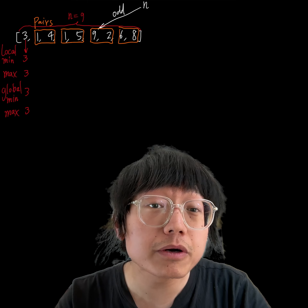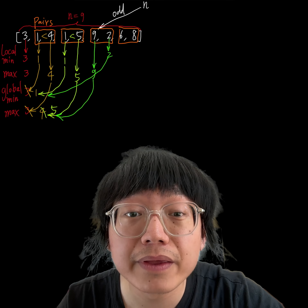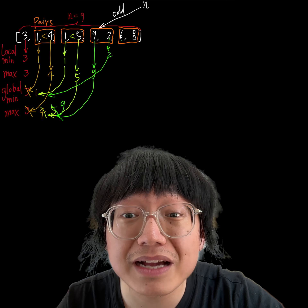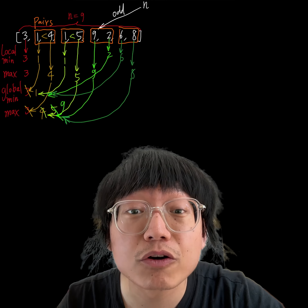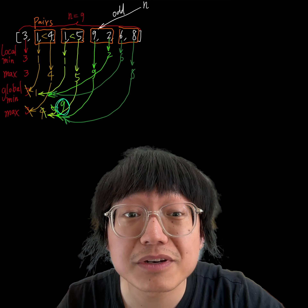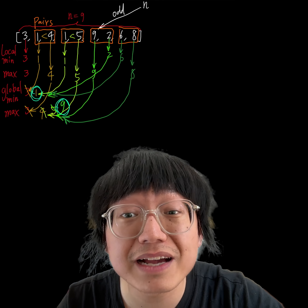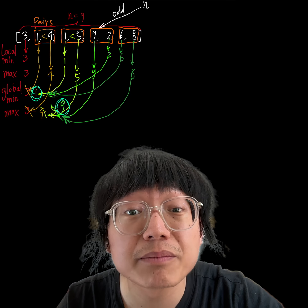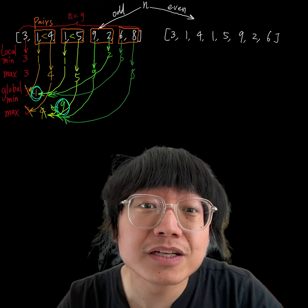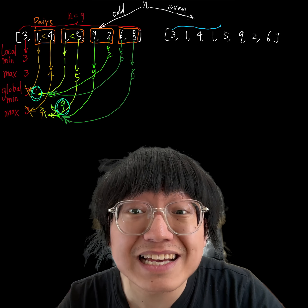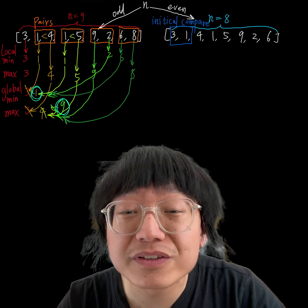In the second pair, the local minimum is 1 and the local maximum is 5. The minimum remains 1. We compare 5 with the current maximum 4 and update the maximum to 5. In the third pair, the local minimum is 2 and the local maximum is 9. The minimum remains 1. We compare 9 with the current maximum 5 and update the maximum to 9. In the fourth pair, the local minimum is 6 and the local maximum is 8. The minimum remains 1, and we compare 8 with the current maximum 9 — the maximum remains 9.